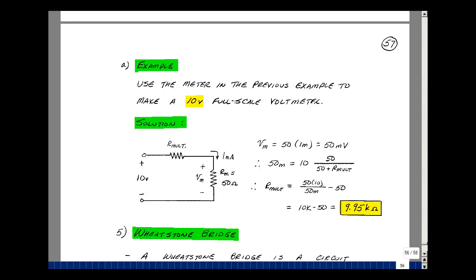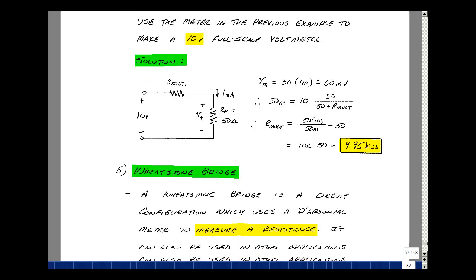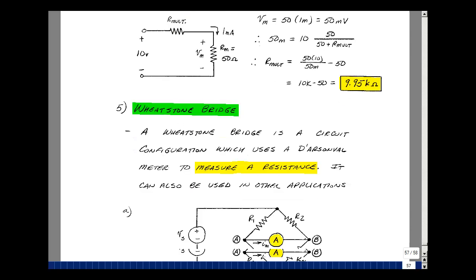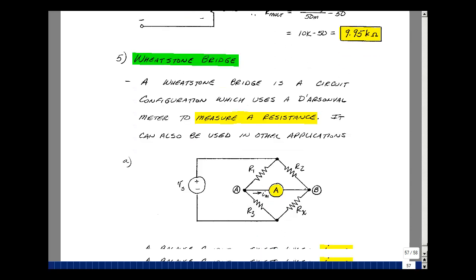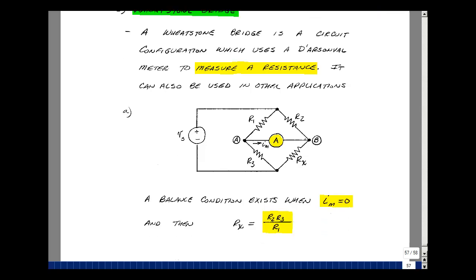We could use the same meter, which actually responds to current, to measure bigger currents and to measure voltages. This following example is what's called a Wheatstone bridge. It uses one of these meter movements to measure resistance.